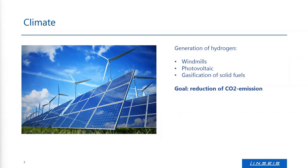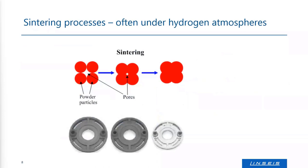Gasification processes can also be optimized and analyzed with our thermo-gravimetric analyzers. We also have traditional applications for hydrogen atmospheres in our equipment, like sintering processes, which are often performed in hydrogen atmospheres — for example, the sintering of powder metals.